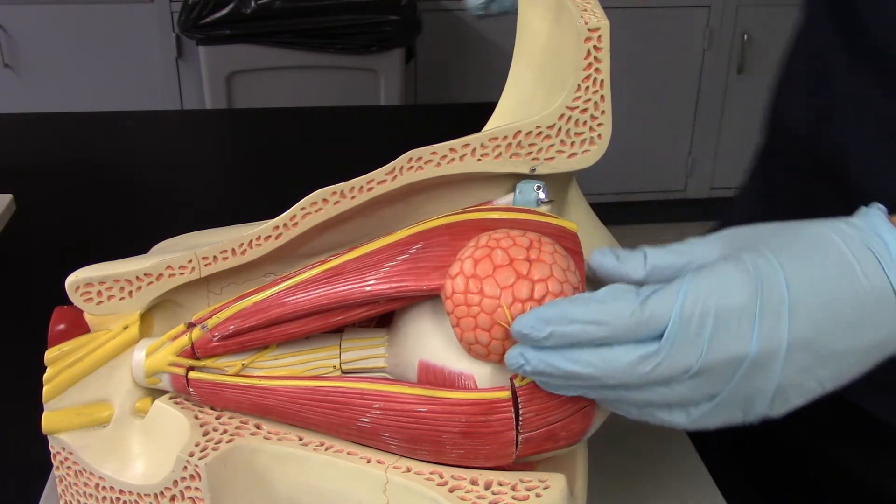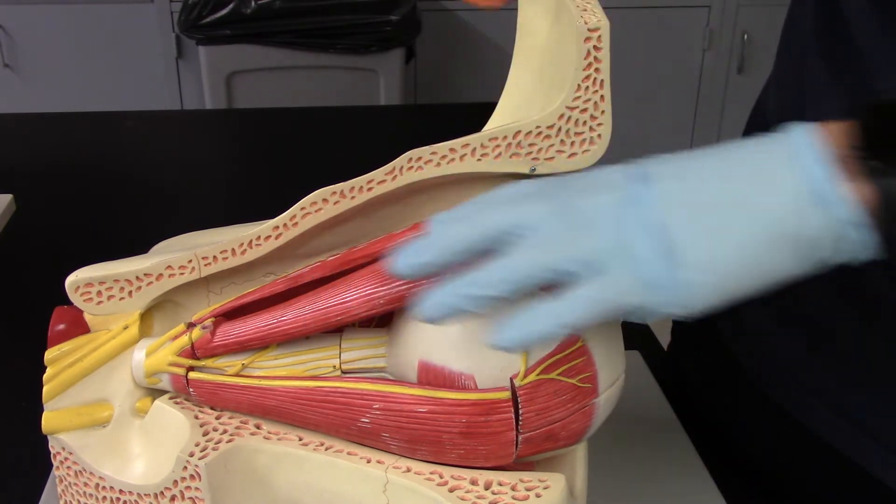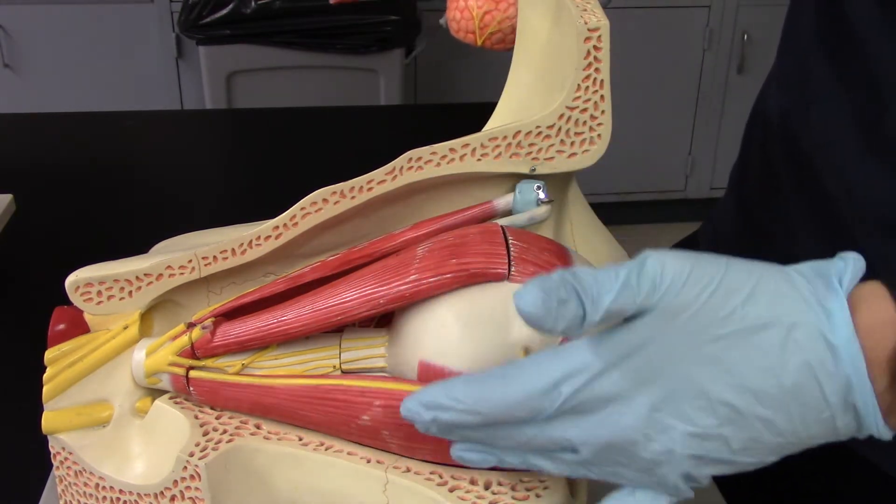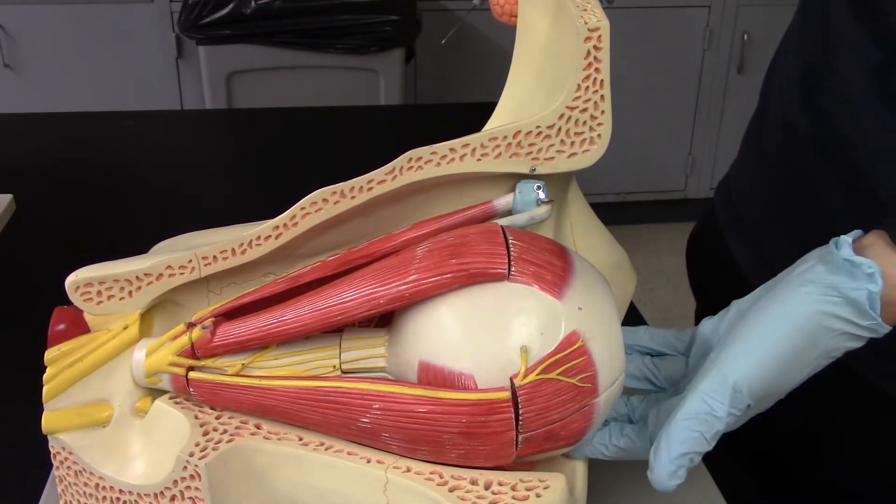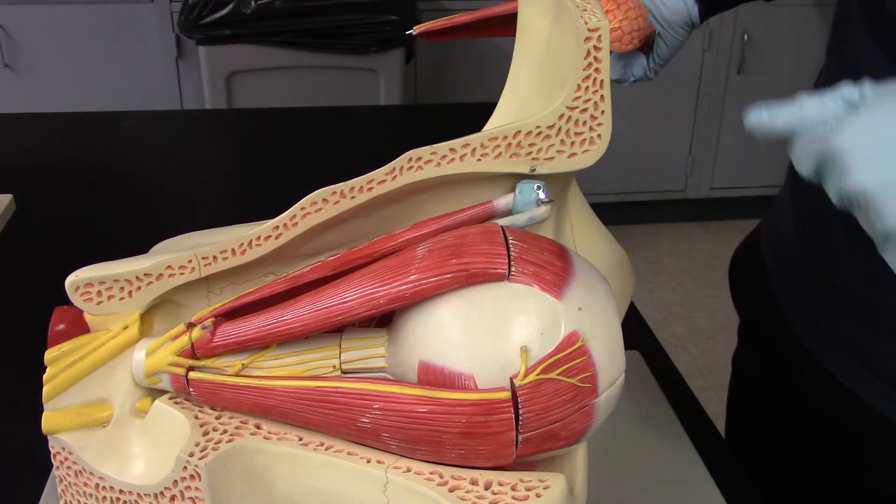Starting off, we have a couple muscles we're going to talk about. First, we have the superior rectus muscle, lateral rectus muscle, inferior rectus muscle below, and then medial rectus muscle on the side.